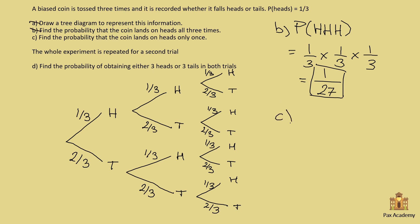Part C says find the probability that the coin lands on heads only once. So let's see how many different outcomes there can be for heads only once. The first possibility is heads, then tails, tails — so we get heads on the first toss only.